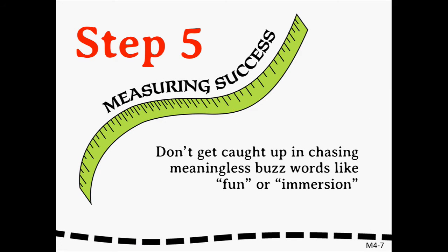Let's talk about step five, the point in our iterative process where we review our work. As you're reviewing, don't get caught up in chasing meaningless buzzwords like fun or immersion. Subjective qualities like those, or really any subjective qualities, can be very hard to measure and vary greatly from person to person. As you're reviewing your work, it's imperative that you have a clear understanding of the metrics that you're measuring against. So try to break your intentions down into measurable elements.